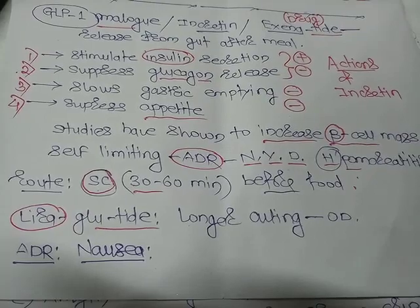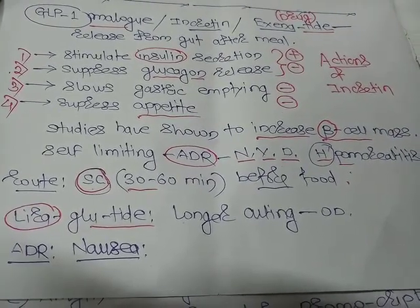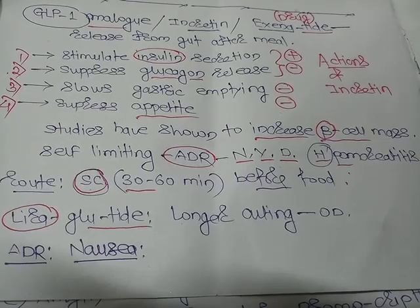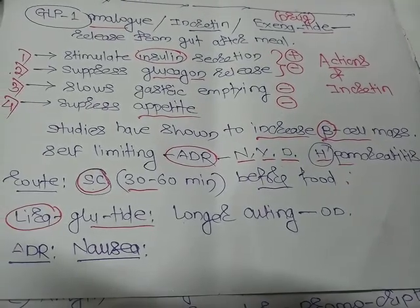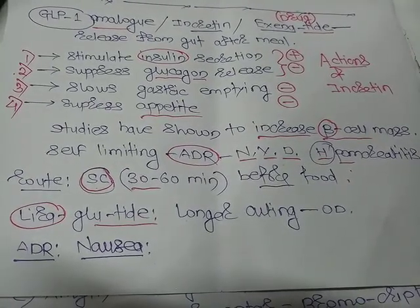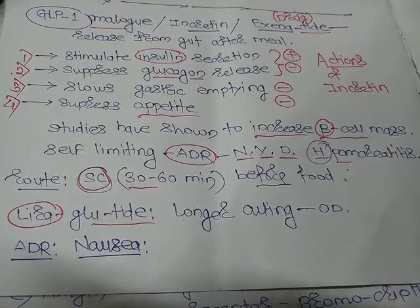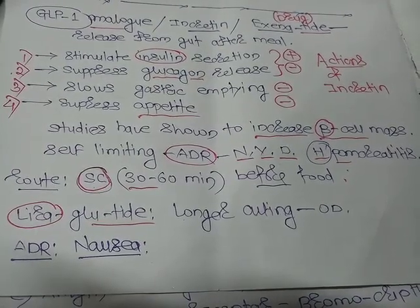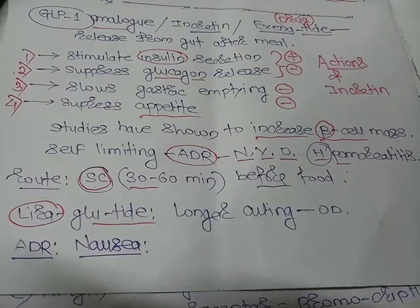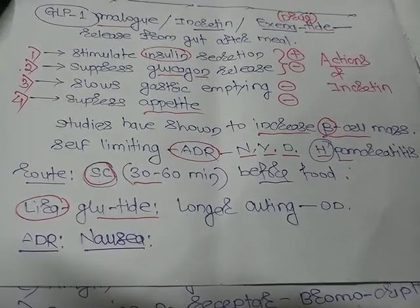Liraglutide is the longer-acting analog of exenatide. The adverse drug reactions of GLP-1 analogs like exenatide or liraglutide are mainly nausea and vomiting in a few cases.